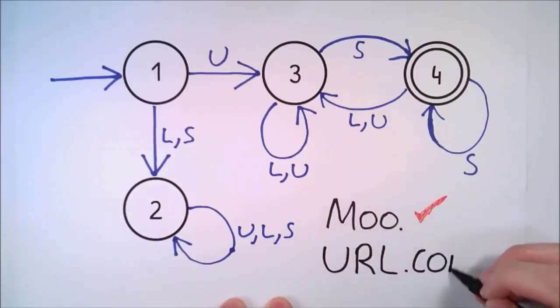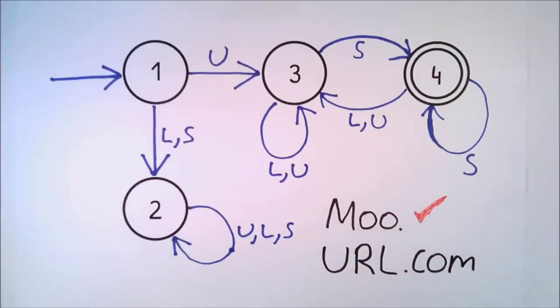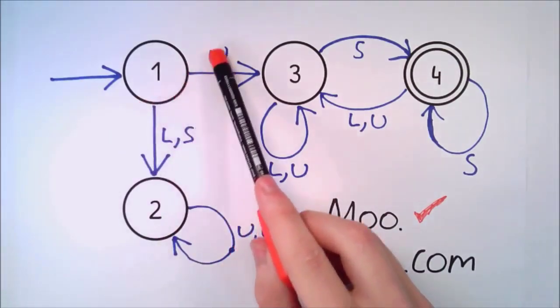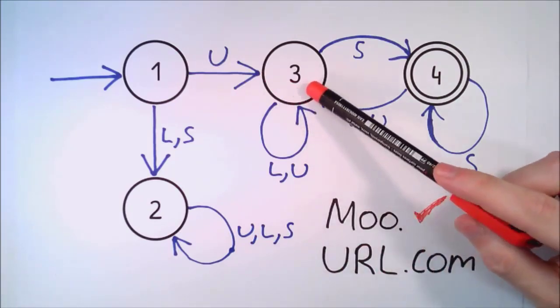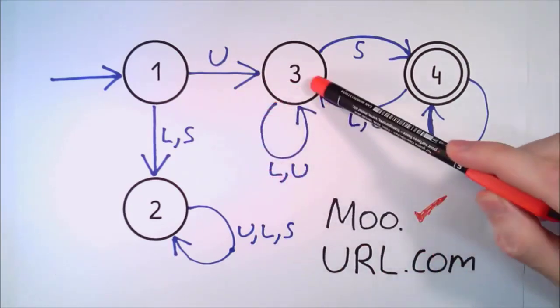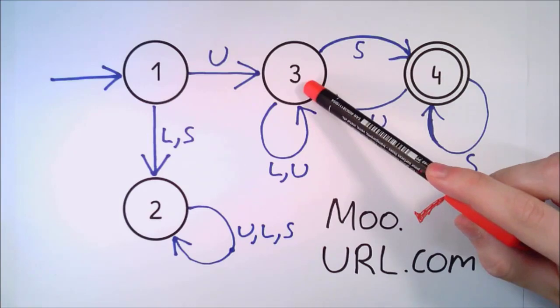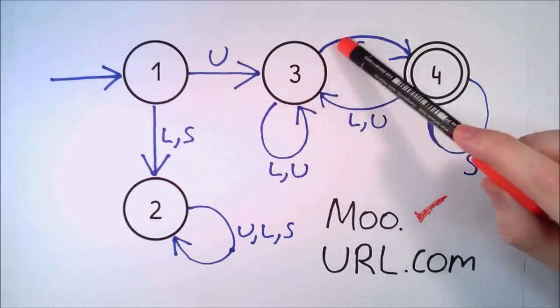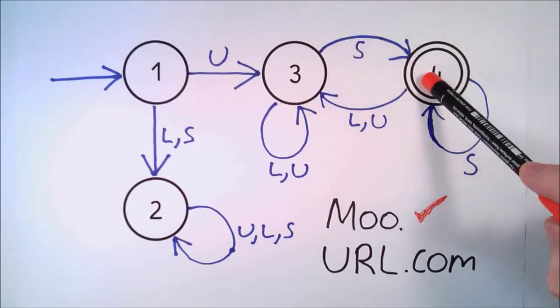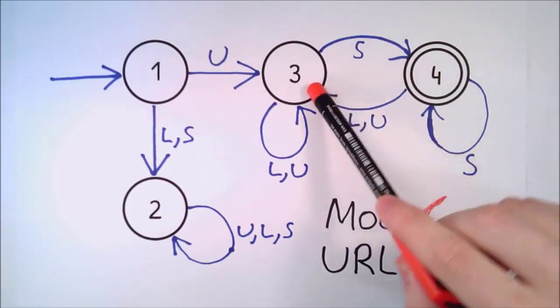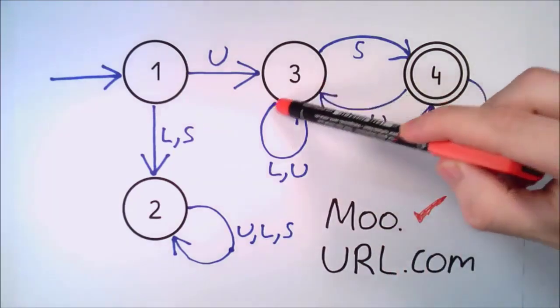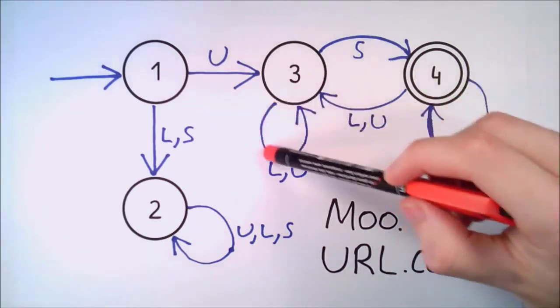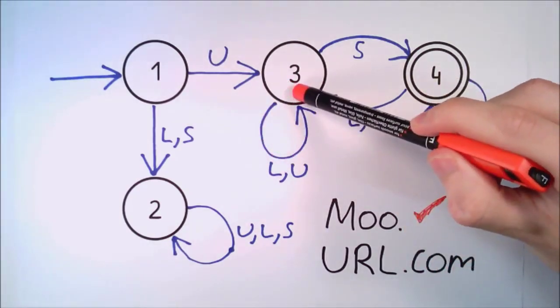Let's look at another sentence, URL.com. Starting again from the start state, we take the uppercase letter U transition to state 3, then an uppercase R transition to state 3, another uppercase L transition to state 3, a full stop transition to state 4, a lowercase c transition back to state 3, another lowercase o transition to state 3, and lastly, the lowercase m transition to state 3.